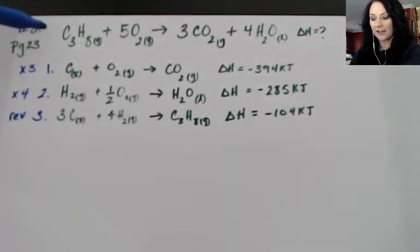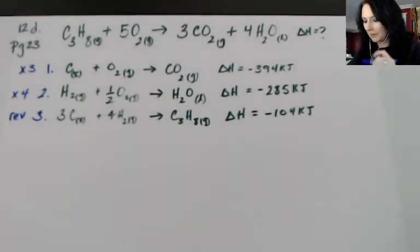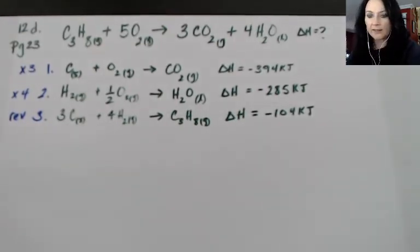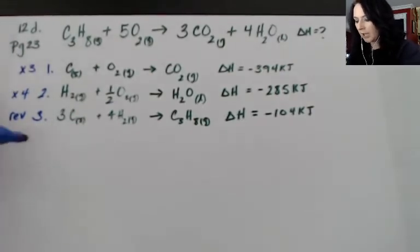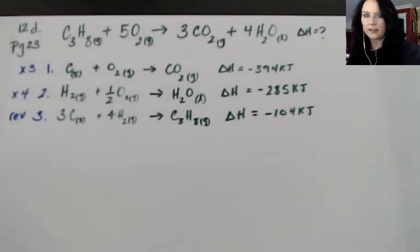So this might take a couple of minutes here to write out, so just bear with me because I want to make sure that we are doing the correct changes. So the first one is multiplying by three and I'm going to leave off the states and all this just to make it a little bit faster.